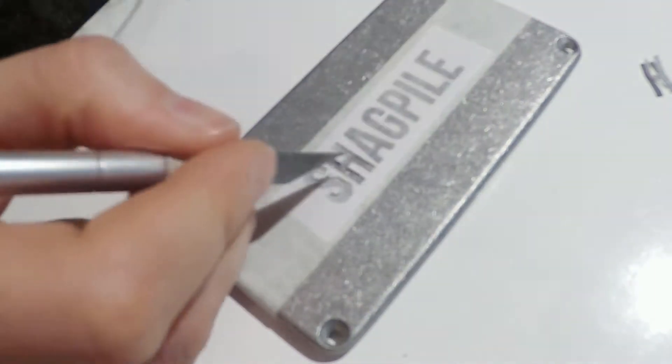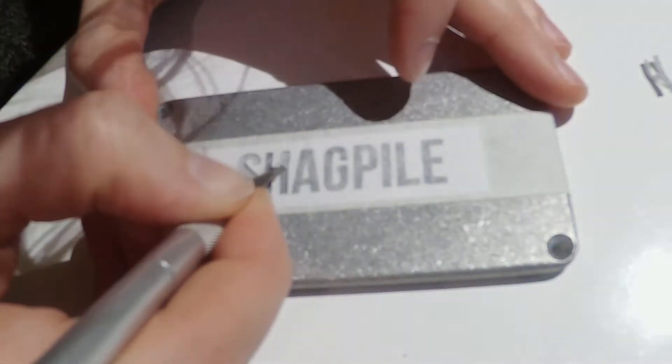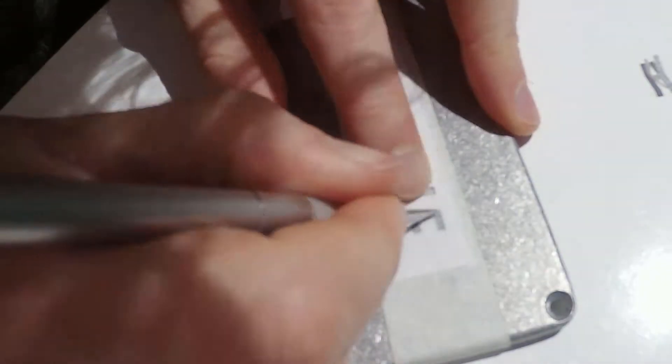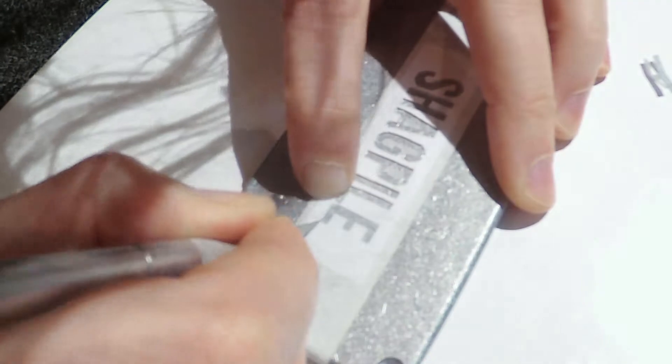So first I've masked off my design with a bit of masking tape and then a piece of paper with the design printed on it and then masking tape over the top of that.